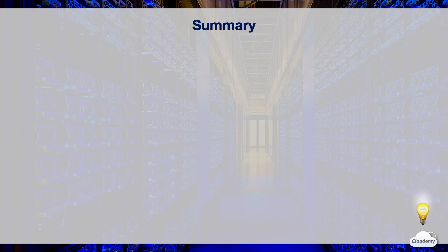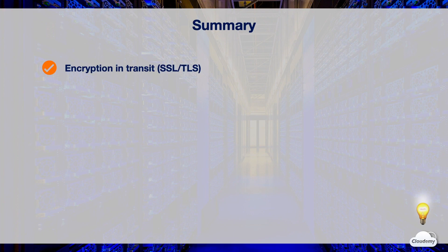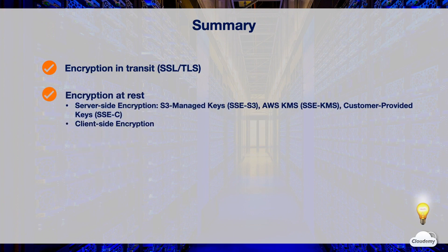In this episode, we've learned S3 encryption options. Encryption in transit helps protect data traveling to and from S3 using SSL or TLS. Encryption at rest means data is encrypted while it's stored on S3. You can use server-side or client-side encryption to protect data in S3 at rest. S3 offers SSE-S3, SSE-KMS, and SSE-C. That's all for S3 encryption — thanks for watching and see you in the next episode.